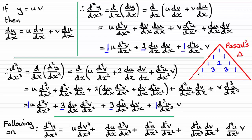From Pascal's triangle: we must have 1, then 1+3=4, then 3+3=6, then 3+1=4, then 1. So the coefficients are 1, 4, 6, 4, 1. That means in front of the terms we have 1, then 4, then 6, then 4, then 1. You don't need to write the 1s, but you definitely need the 4, 6, and 4.